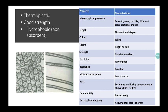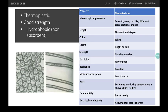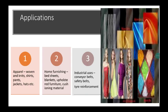It is a thermoplastic fiber having good strength and hydrophobic by nature, that is non-absorbent. When we are looking at its microscopic appearance, you can see here the longitudinal section and cross-section of these fibers. It has a smooth, even, rod-like appearance with different cross-sectional shapes. It can be filament fiber or staple fiber. It has white color. Its luster is bright to dull, meaning it can be controlled. It has good to excellent strength. Elasticity is fair to good. Resilience is excellent. Moisture absorption is very low, that is less than 1 percent. Effect of heat: it can soften or stick above the temperature 204 degree centigrade. It burns slowly and accumulates static charges. So these are the properties of polyester fiber.